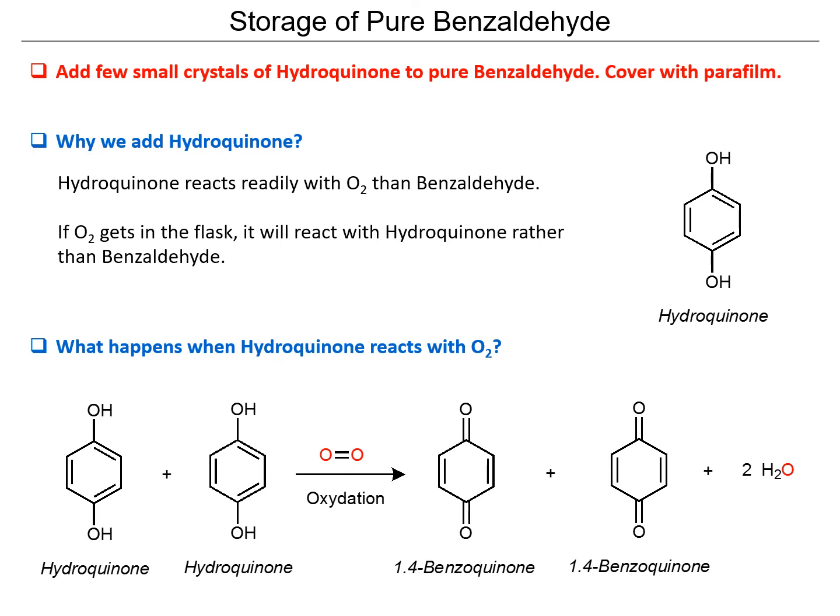For the storage of pure benzaldehyde, we're going to add a few crystals of hydroquinone to the pure benzaldehyde that we extracted and cover it with parafilm. Why do we add hydroquinone? Hydroquinone reacts more readily with oxygen than benzaldehyde. This molecule will undergo a very similar mechanism of reaction with oxygen, so if oxygen gets into the flask it will prefer to react with the hydroquinone rather than the benzaldehyde.